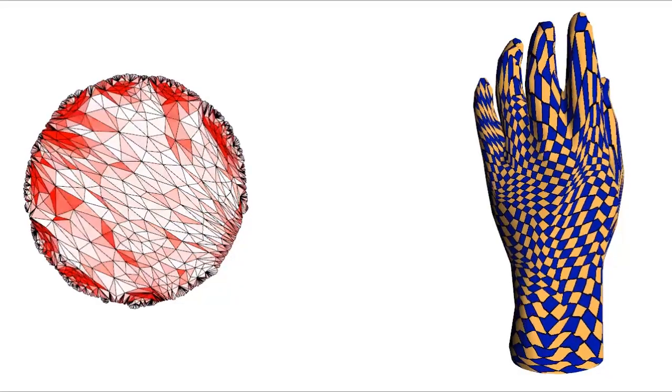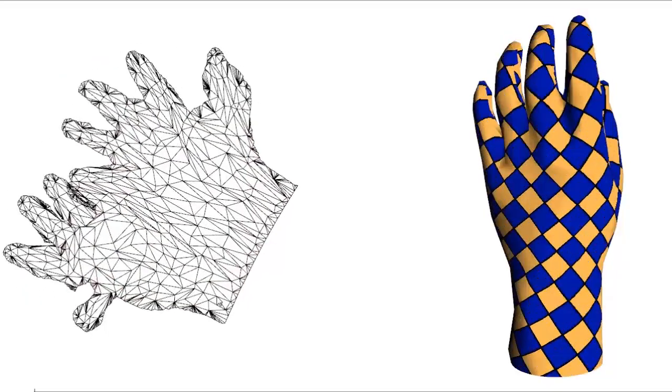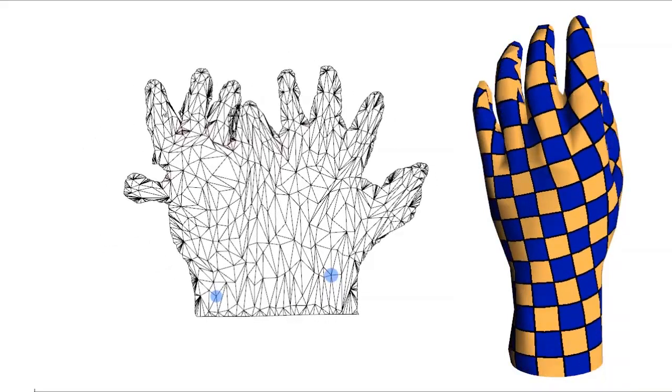Our method only prevents inverted elements and global overlaps might still occur. Since our method is interactive, we can use it to interactively resolve all the self-intersections, obtaining a bijective parameterization.